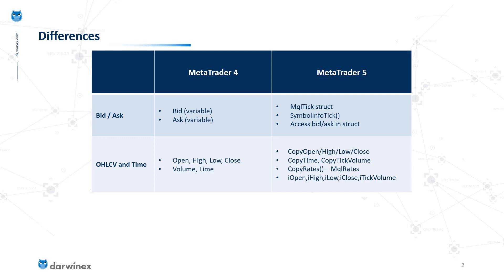That's one option. There's another option to copy all of this information for a given timestamp or shift index using the CopyRates function, which copies that information into the MQLRates data structure. The third option is to use the iOpen, iHigh, iLow, iClose, and iTickVolume functions. All of these require the right symbol, the right period, and the shift index you are looking for.